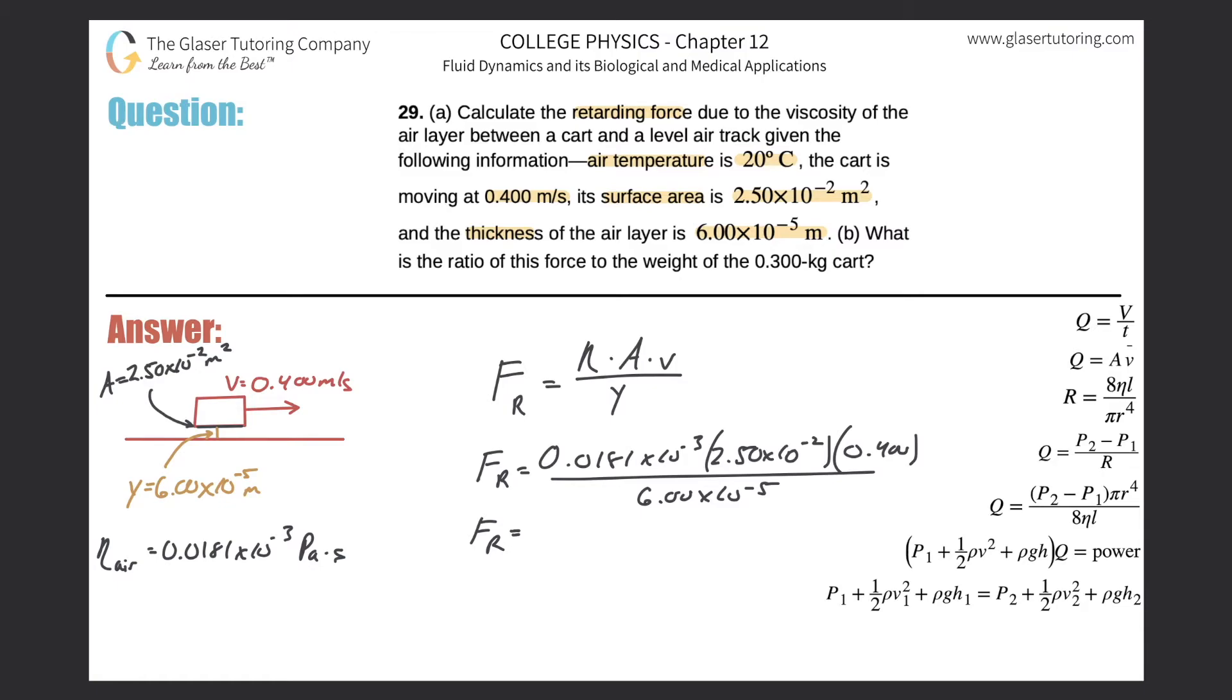We're going to have to take out my calculator. So here we have 0.0181 × 10^-3 multiplied by 2.5 × 10^-2 times 0.4, divided by 6 × 10^-5.